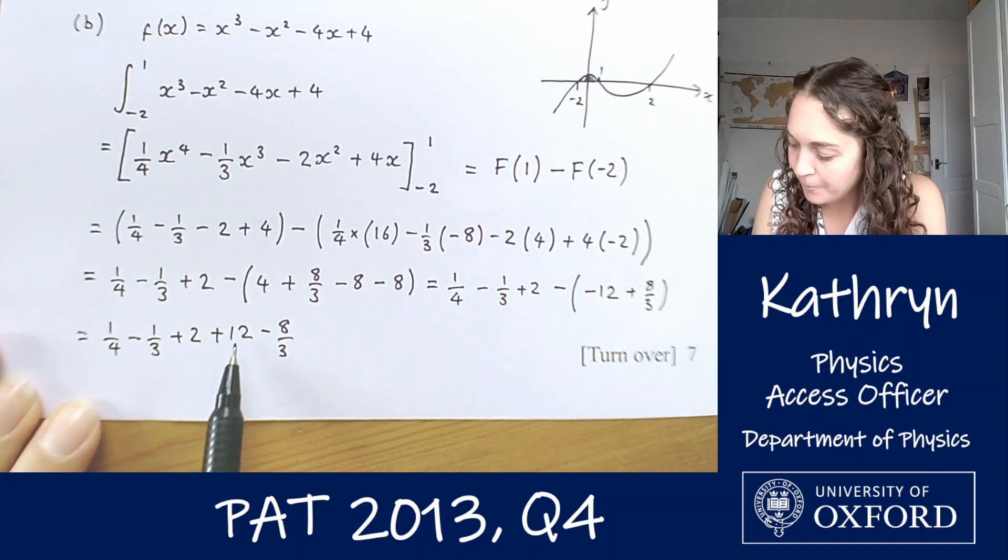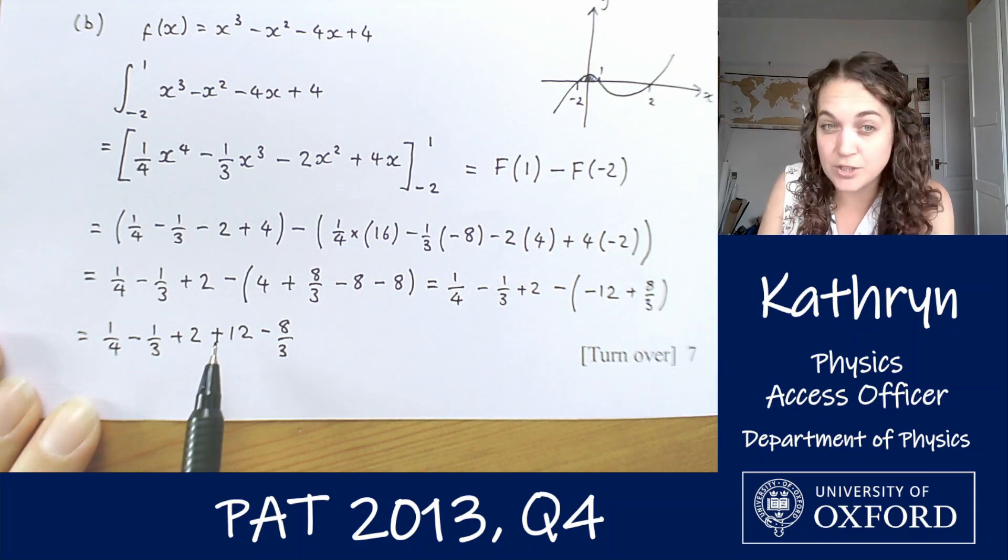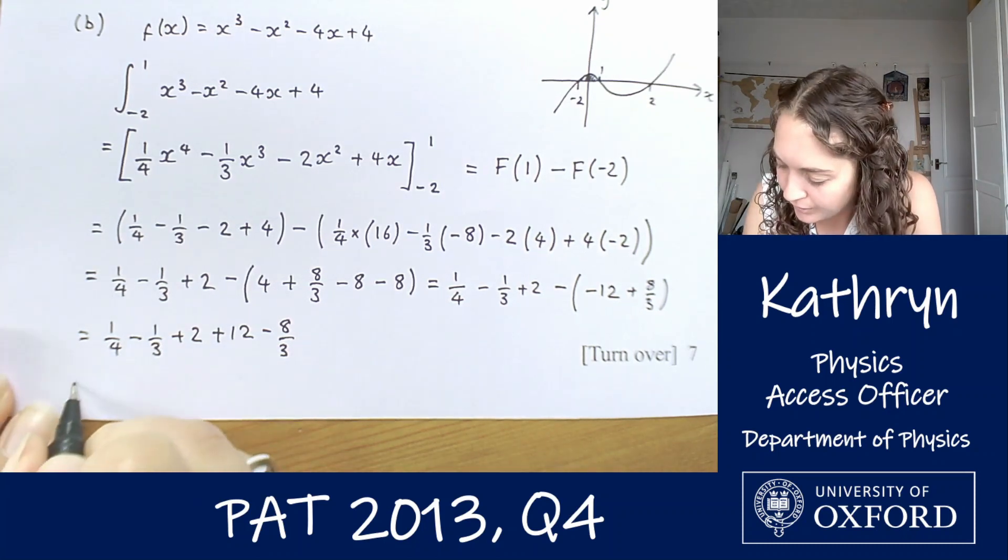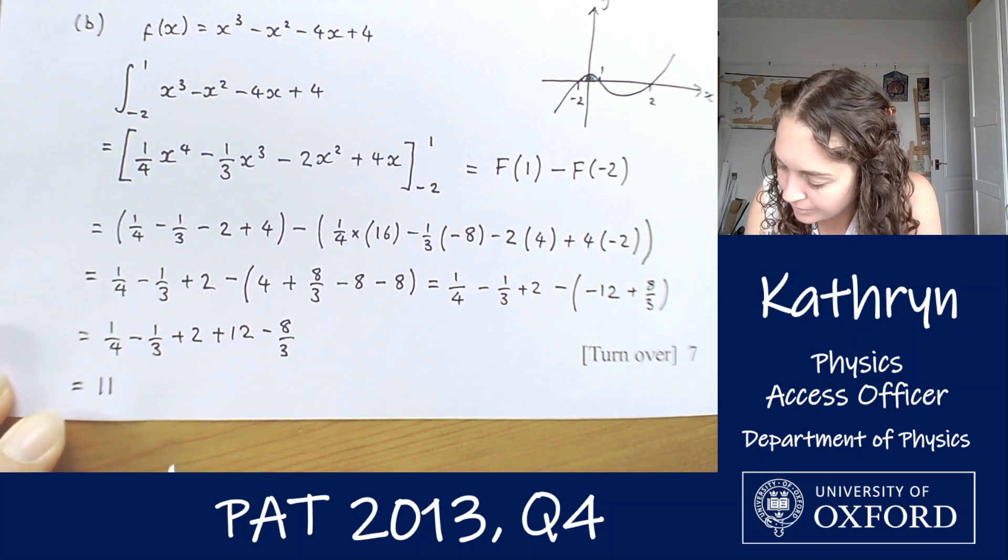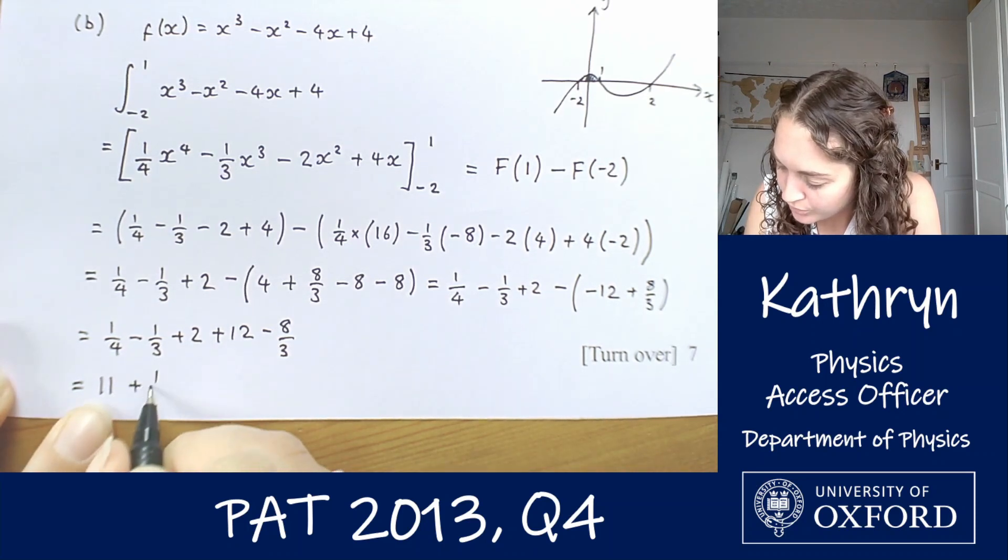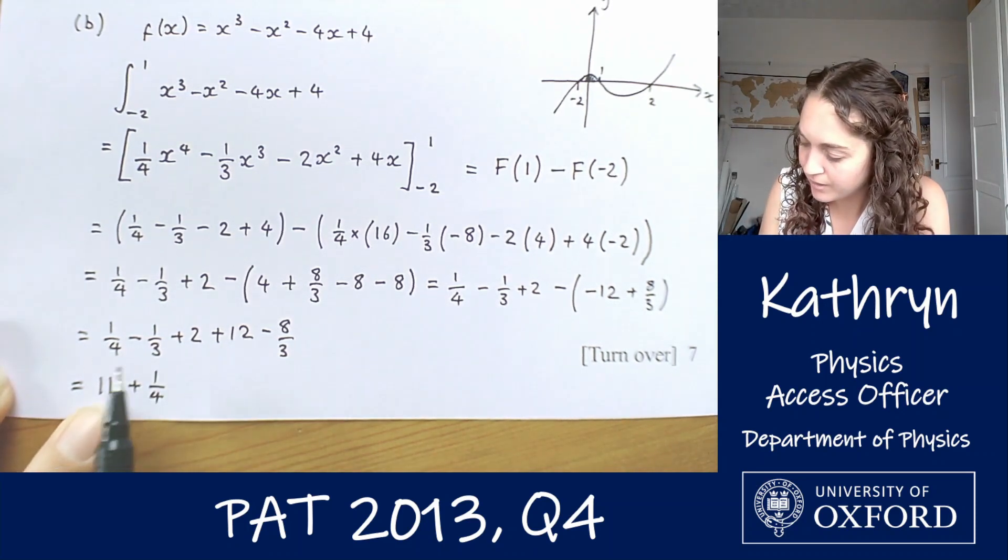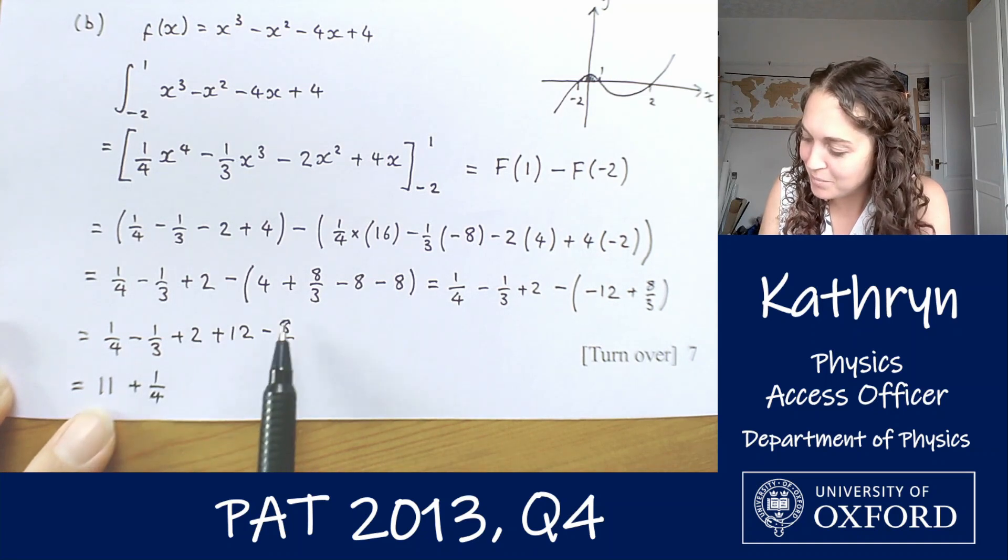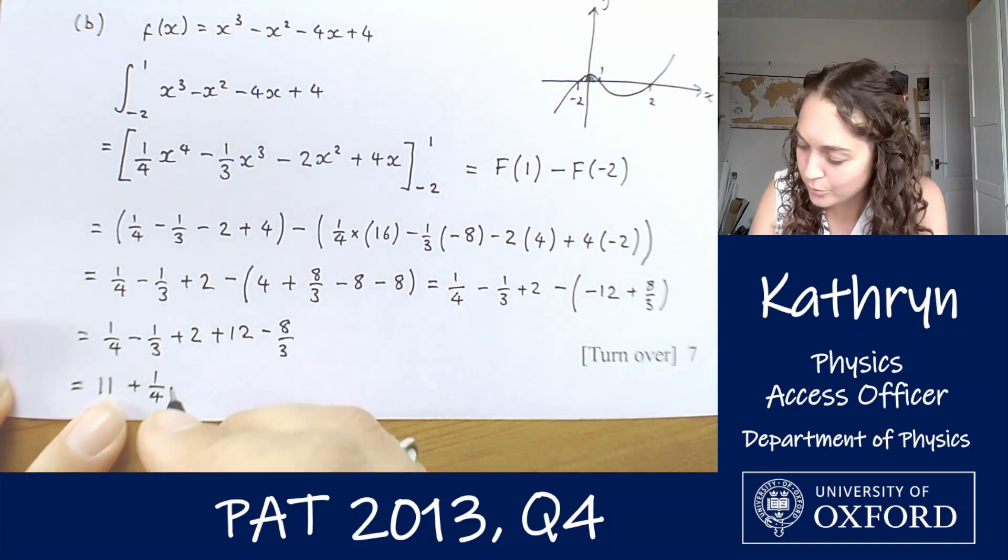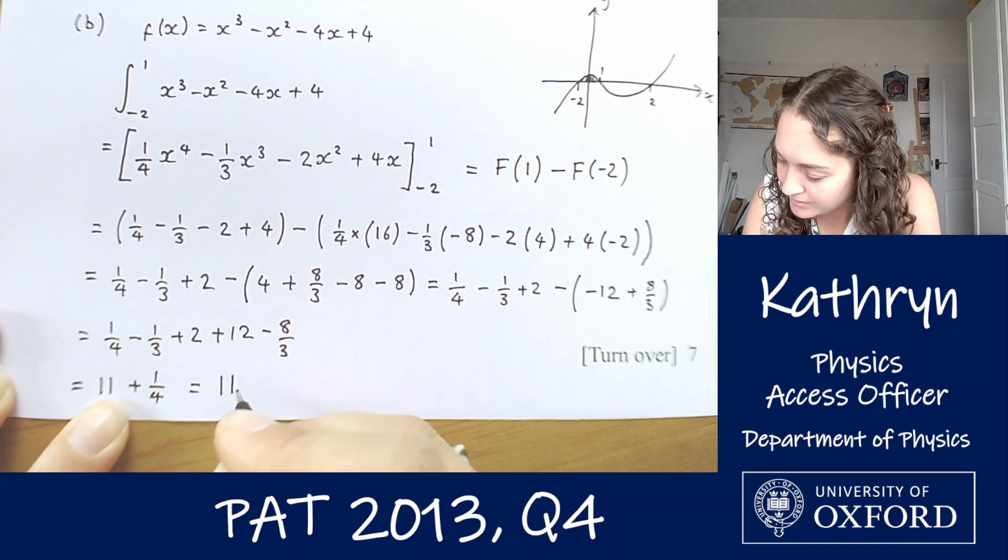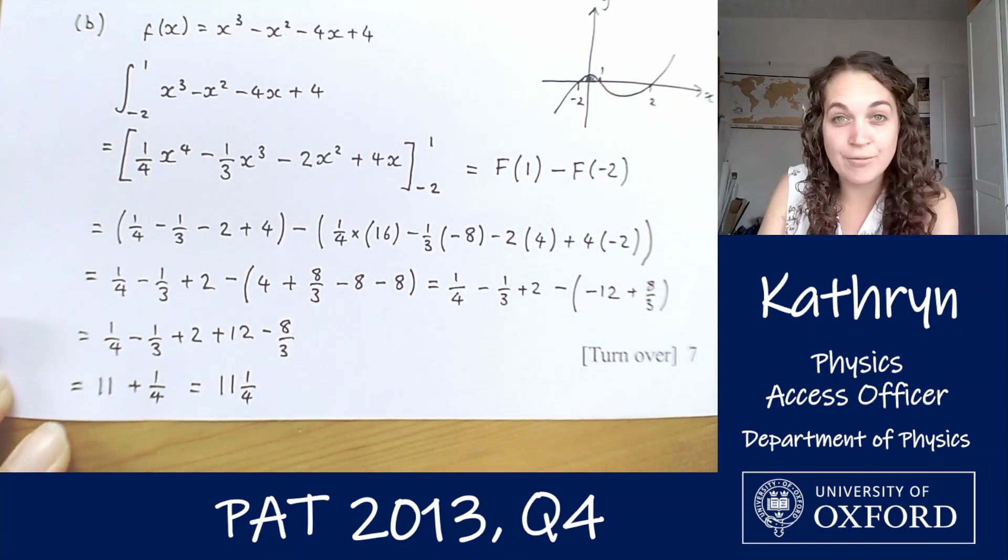So we've got 12 plus 2, so that's 14. 14 minus 3 is 11. So we've got 11 plus one quarter. And that counts for everything because that was our minus a third, our minus 8 over 3, our 2, our 12, and our quarter. So our final answer is 11 and a quarter. And that is the area bounded by the curve f(x) and the x-axis between the two smallest roots.